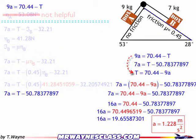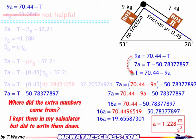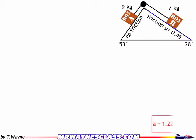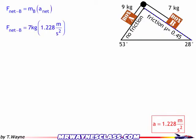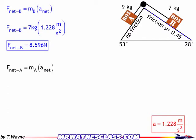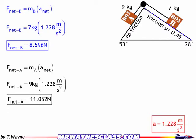To find the net force, I use F equals ma for each box. The extra decimal values are stored in my calculator. For box B: 7 kg times 1.228 m/s² gives a net force of 8.596 newtons. For box A: 9 kg times 1.228 m/s² gives 11.052 newtons. Those are the final answers — the net force on each box.